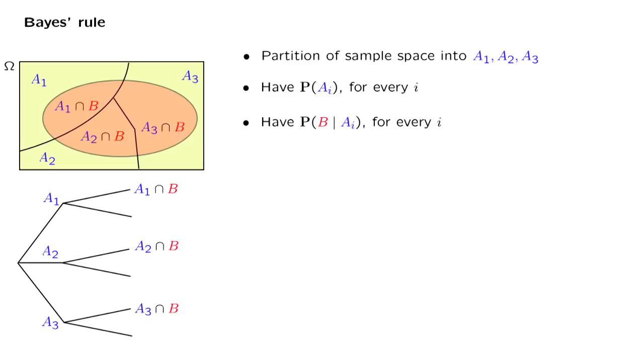We have a sample space which is partitioned into a number of disjoint subsets, or events, which we think of as scenarios. We are given the probability of each scenario, and we think of these probabilities as being some kind of initial beliefs. They capture how likely we believe each scenario to be.